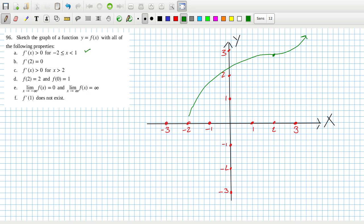Okay, f(2), oh rats, f(2) is 2 and f(0) is 1. f(2) is 2 and f(0) is 1. Okay. And then coming from minus infinity and it's going to infinity. Okay, and at one it doesn't exist, all right, so I'll just go...